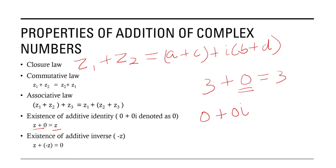The next one is the existence of additive inverse. In the real number system the additive inverse of 3 is minus 3. When we add a number and its additive inverse we get the additive identity. Similarly, in complex numbers the additive inverse is minus z, and when we add z and its additive inverse minus z we get the additive identity 0. That is, z plus bracket minus z is equal to 0.